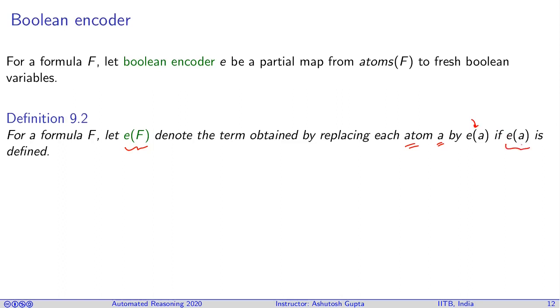For example, suppose you have this formula. It has one atom, this is the negation of this atom—these two atoms are negation of each other. And this is another atom. So you can say they have two atoms.